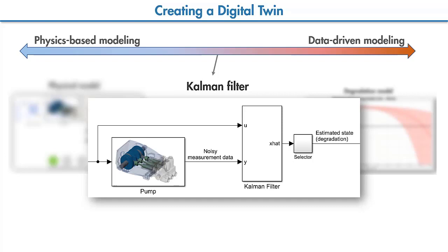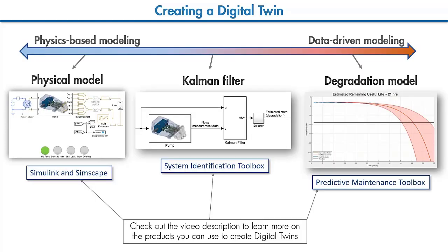Similarly, a Kalman filter can be also used as a digital twin, which can model the degradation of the pump as a state and periodically update the state to represent the current condition of the pump. These are some examples of how a digital twin can be created. Based on the intended use, the digital twin can also be a combination of these models.